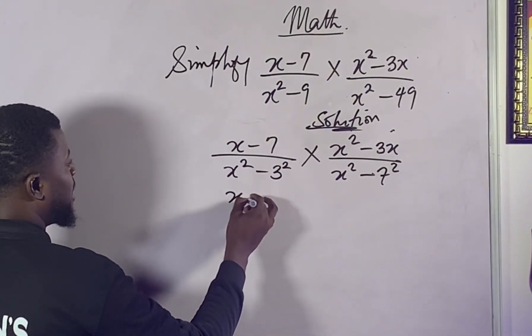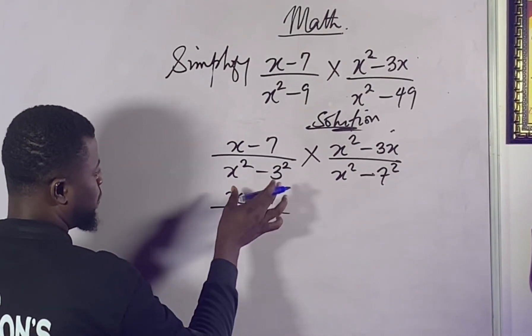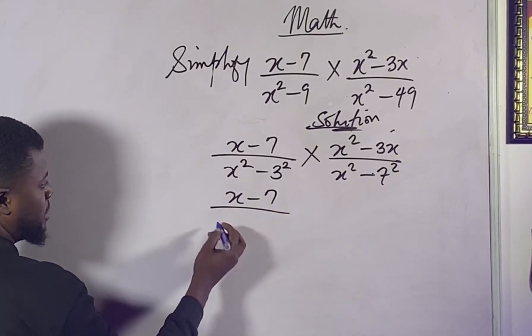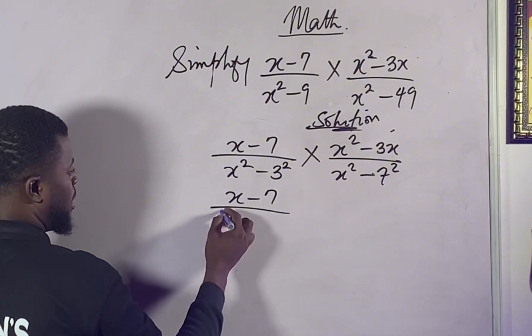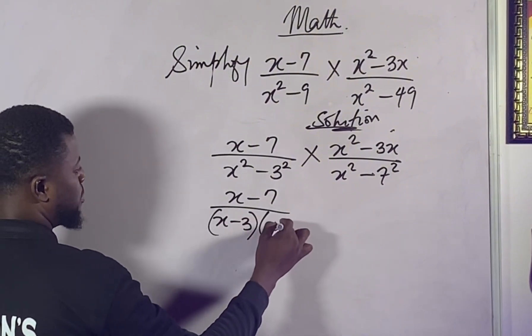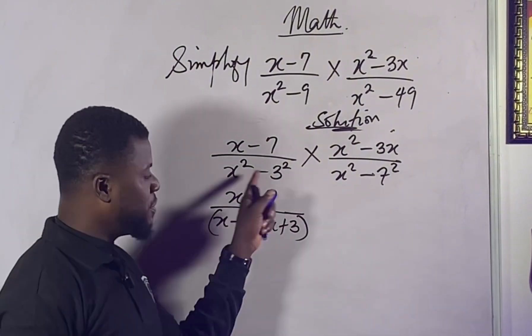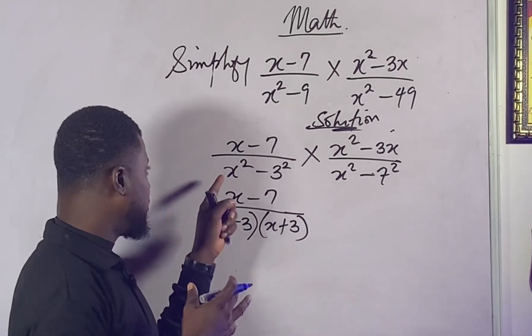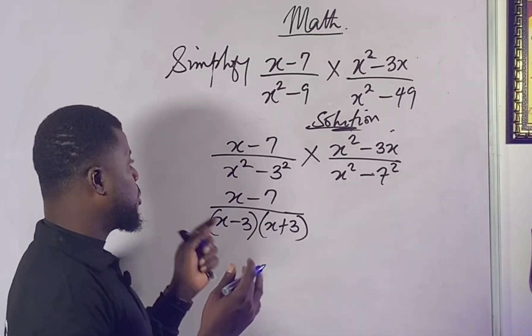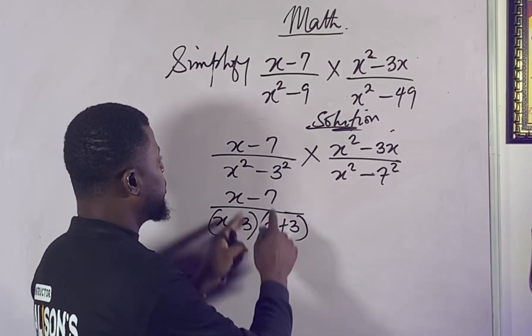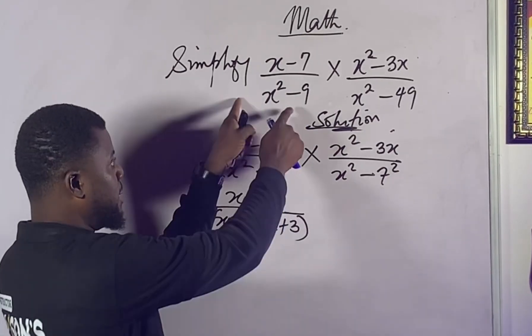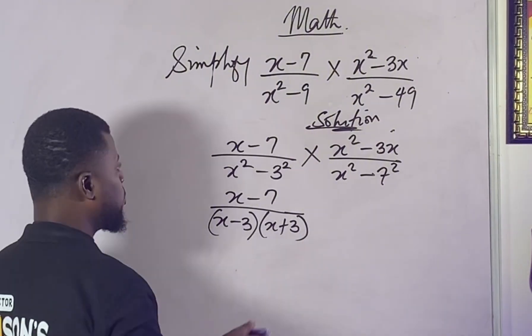All right, let's go. So we have this to be x minus seven. Remember difference of two squares is how you handle it: x minus three, which is this, into x plus three. So when you see difference of two squares you need to take the negative of the denominator and also the positive of denominator, because if you expand this you're going to get this.